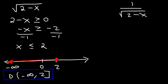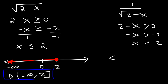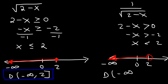For the example on the right, everything is the same except that since the radical is on the bottom, it cannot equal 0 — it can only be greater than 0. So negative x will still be greater than negative 2, and if we divide by negative 1, the inequality will still change sign. So x is less than positive 2. We're going to use an open circle instead of a closed circle, still shading towards the left. So the domain is going to be from negative infinity to positive 2, with parentheses as opposed to brackets, since it does not include 2.